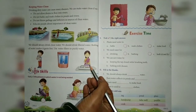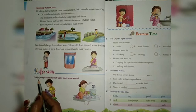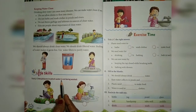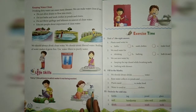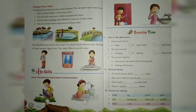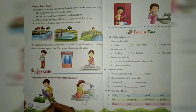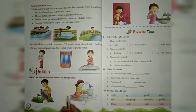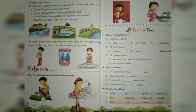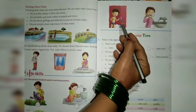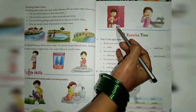Look at this picture. Now next is life skills — tick the picture in which water is not being wasted. We can tick here because here water is not being wasted. Here water is being wasted. Look at this picture — we can tick here because here water is not being wasted.